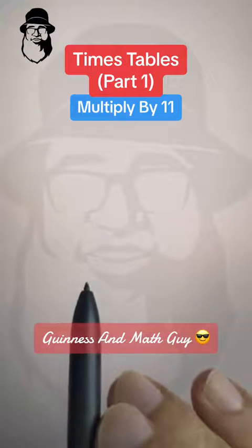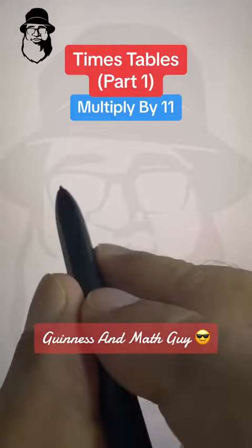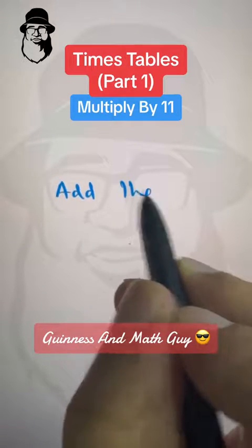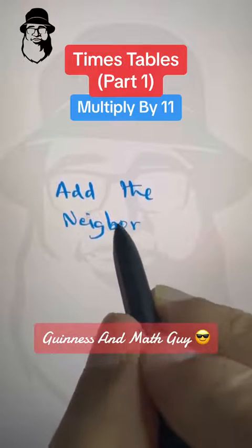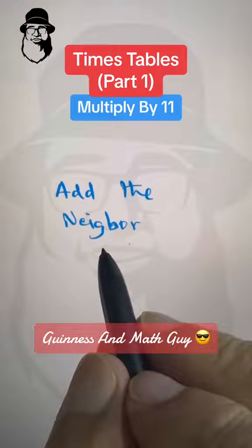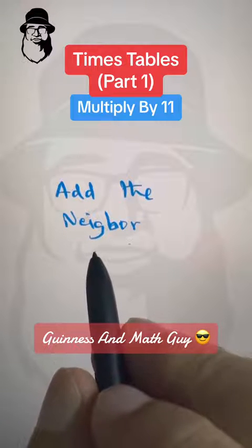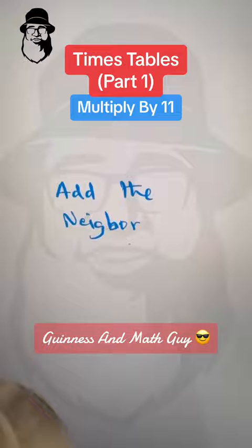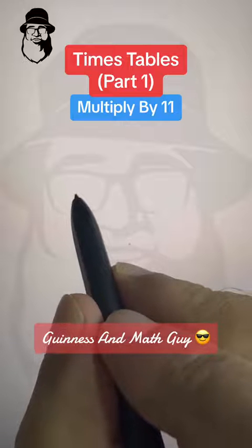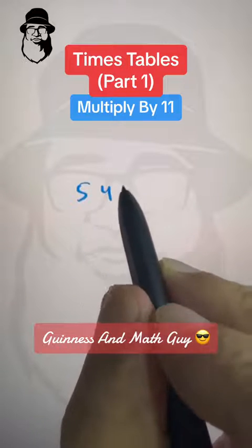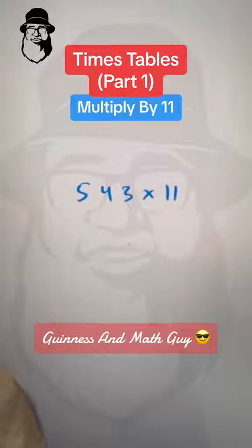We can make one big rule out of the three rules. And the rule is only this. Let me write it. Add the neighbor. I hope the spellings are correct. But if they are not, just forgive me. I am not an English guy. Okay. So first let's do a small one. All right. Let's say we have exactly same number, 543 times 11. So we are going to add the neighbor. That's it.